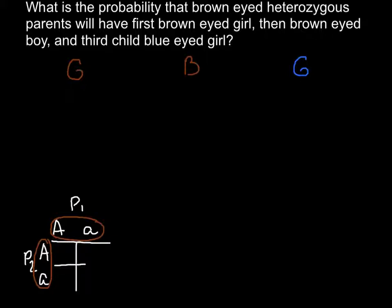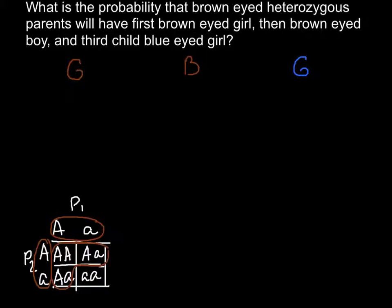So here we build a Punnett square, and as you can see, we can predict the outcome of such a cross. We would have capital A capital A, capital A small a, capital A small a, and small a small a. All three of the first genotypes here would be brown-eyed, so that is three quarters. One quarter will be a blue-eyed child of unspecified gender.